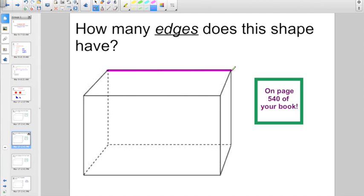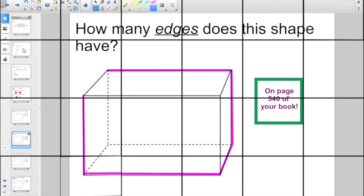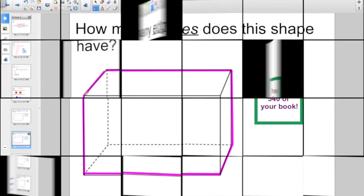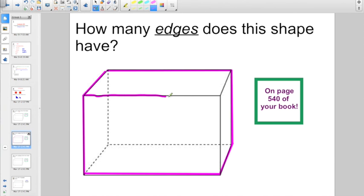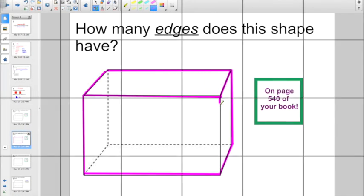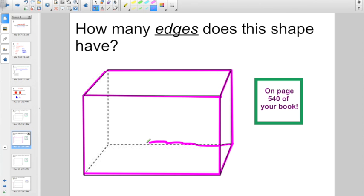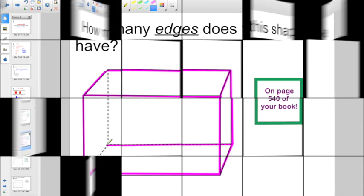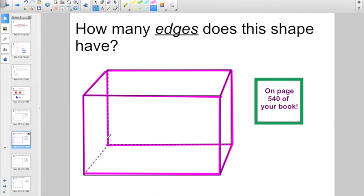We'll start off here going one, two, three, four, there's five, six, there is seven, eight, nine, ten, eleven, and lastly, twelve.